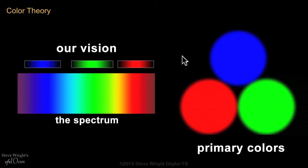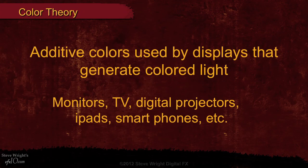And we can use this to good effect to create three primary colors. We use red to match our red sensor, green to match our green sensor, and blue to match our blue sensor. And the beauty is, from all of this, we can make any color in the rainbow. This is the basis of all the display devices that emit light — these three primary colors. Additive colors are used by display devices that generate colored light: things like workstation monitors, TV sets, digital projectors, iPads, smartphones, etc.